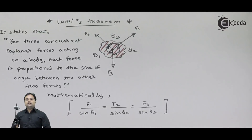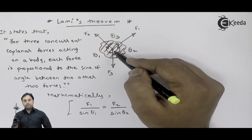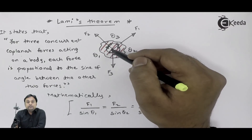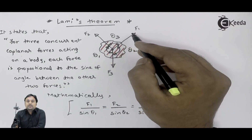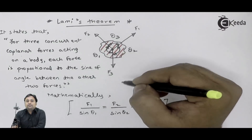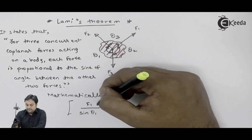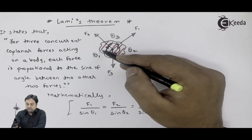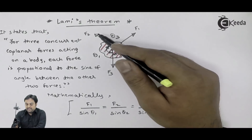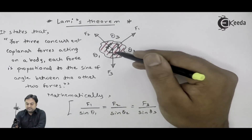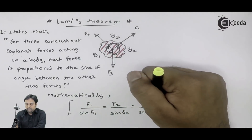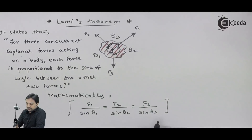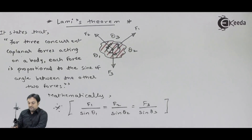This relation is for Lame's theorem. It states that if we have three concurrent coplanar forces acting on a body at a point, then if you take one single force, it is proportional to the sine of the angle between the other two forces. So considering F1, in the denominator write sin(theta1); for F2 write sin(theta2); and for F3 write sin(theta3), which is the angle between F1 and F2. This is the result of Lame's theorem, which we have to remember.